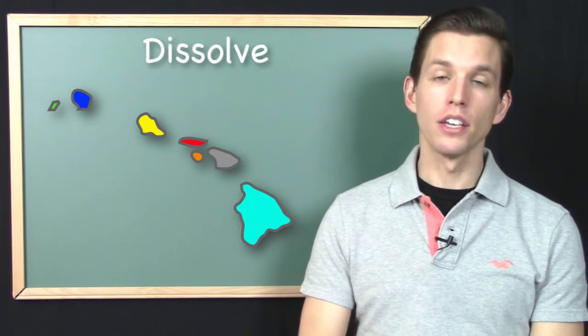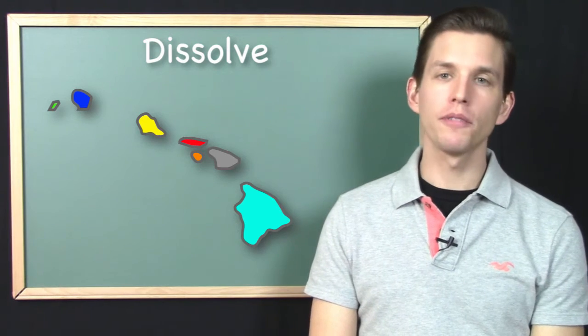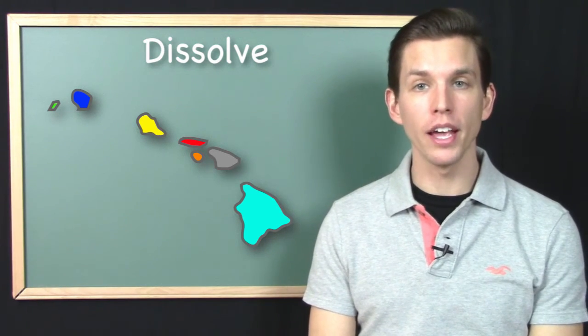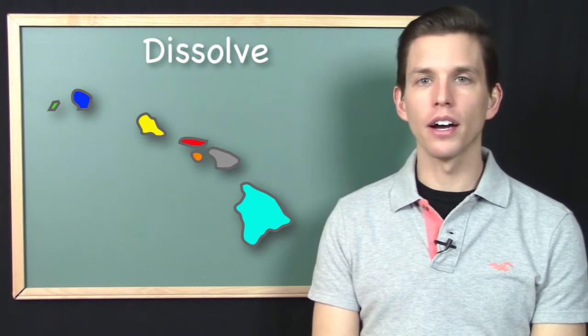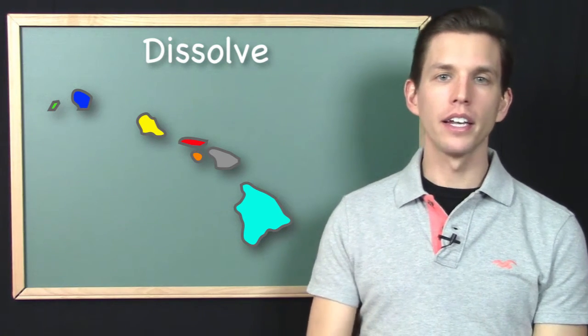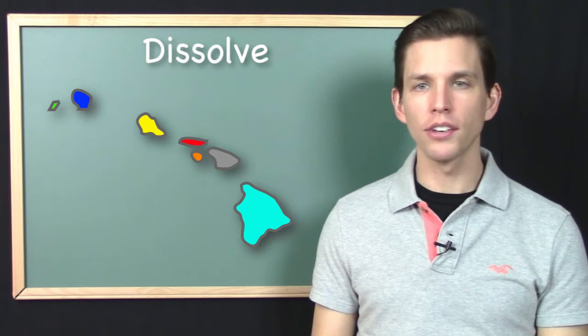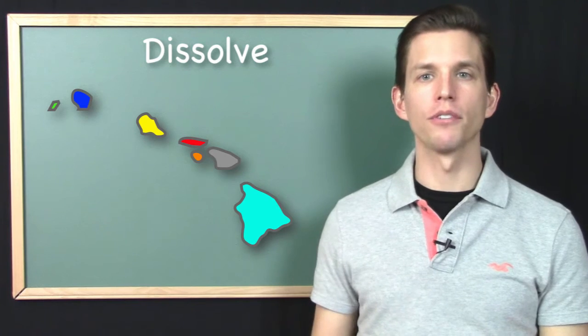So depending on how you want to represent Hawaii in a data set, well you might find that you want each different island to be represented individually. But what if you're in a situation where you would much rather just have Hawaii be one thing, but you open up your data set and you find out that there's a different feature for every single island of Hawaii here.